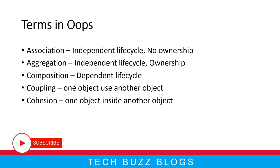Composition means a dependent life cycle. For example, take students and staff — both should be there together. Without students, what is the use of staff? Obviously none. And without staff, what is the use of students? So both have a dependent life cycle; they don't have an independent life cycle at all. That's one example — in real projects you will see more cases.